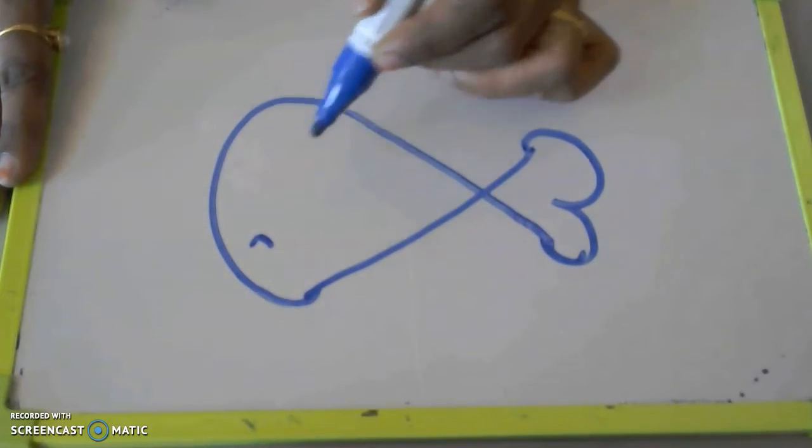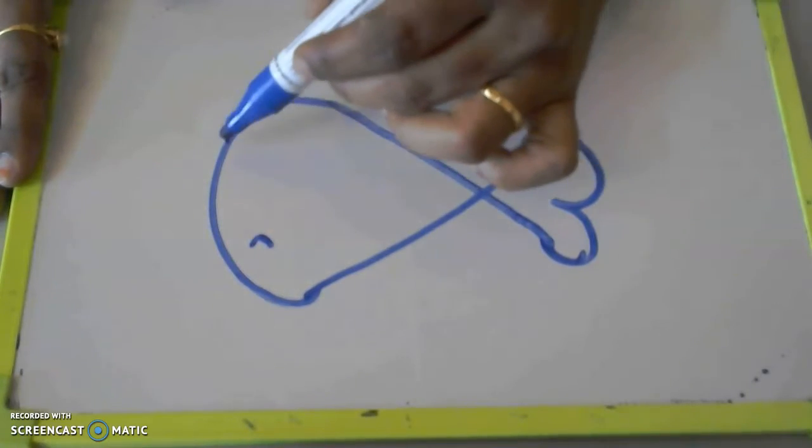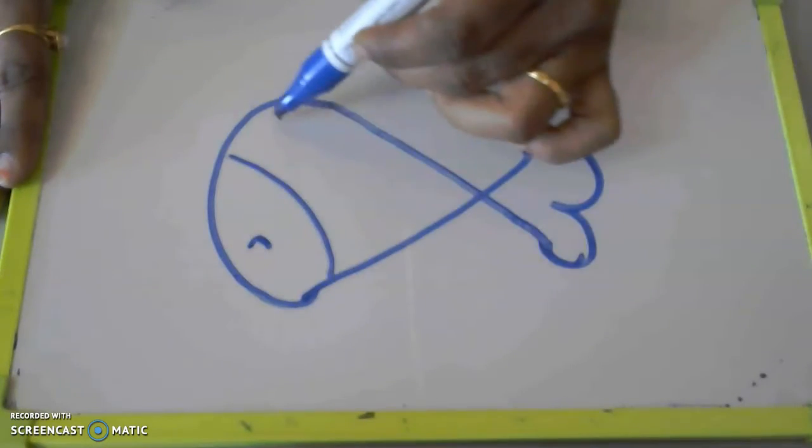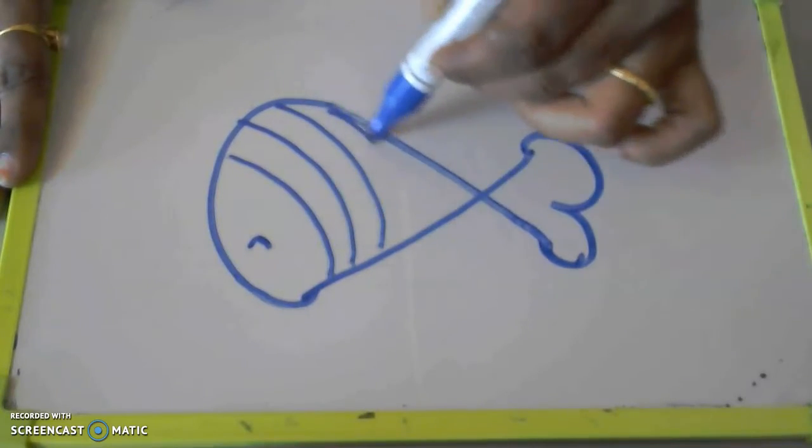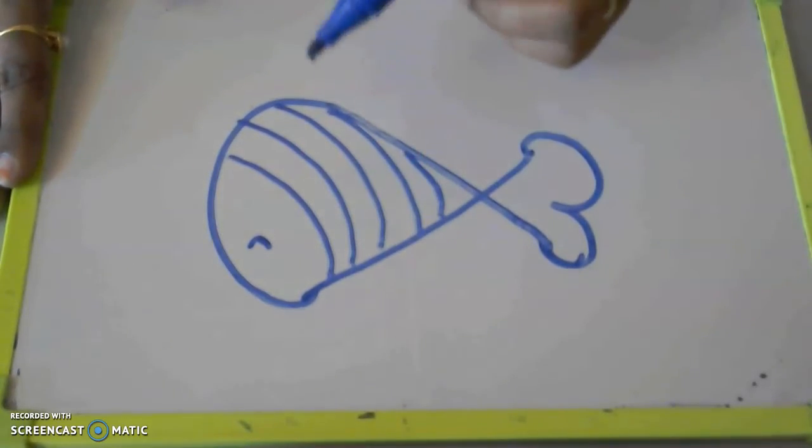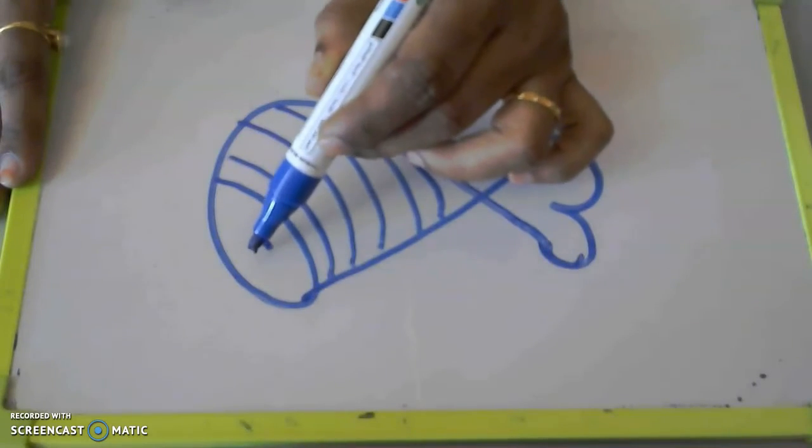You can put a curve here and then you can draw some curves. What is this? This is a fish.